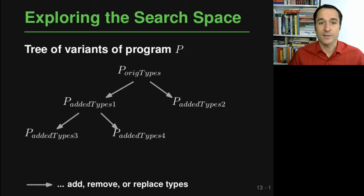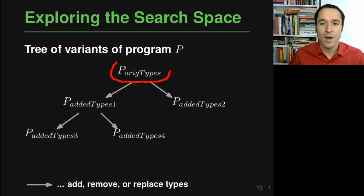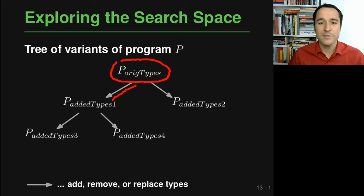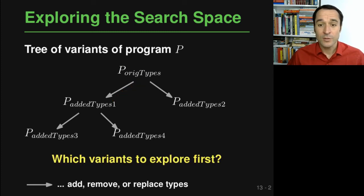Instead of exhaustive exploration, we look at different variants of the program that each use a different type assignment. Starting from the program as given, there are different ways of adding types, which can be thought of as a tree we explore — each edge either adds, removes, or replaces some types. The question is which variants to explore first and how to navigate the search space efficiently.